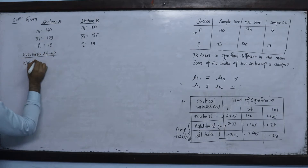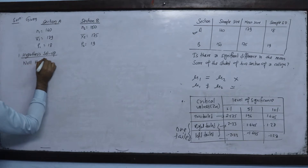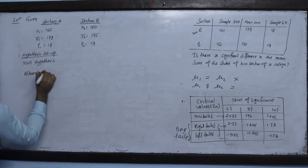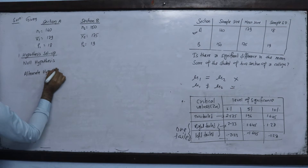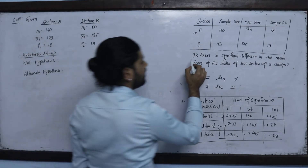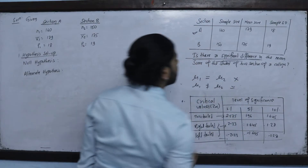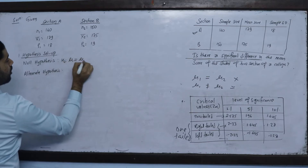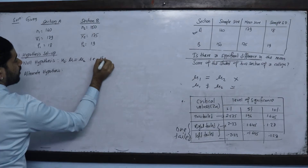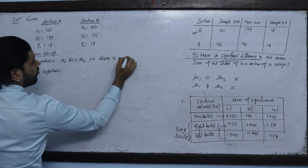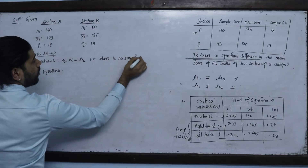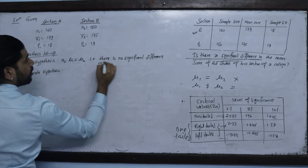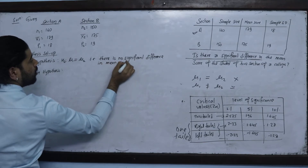Let us set up the null hypothesis and the alternate hypothesis. The null hypothesis states that there is no significant difference in the mean score of the two sections.